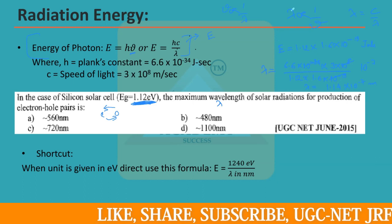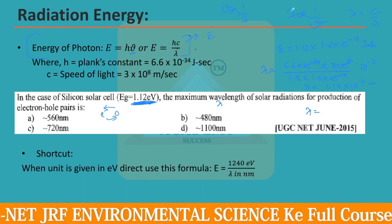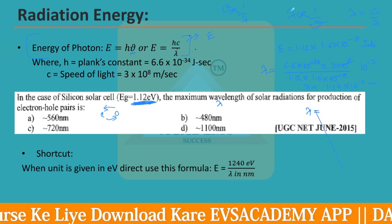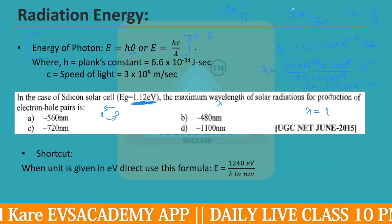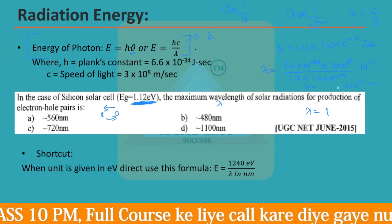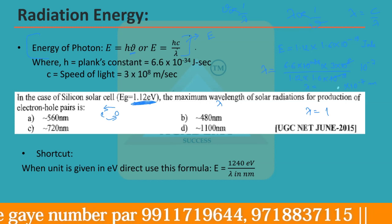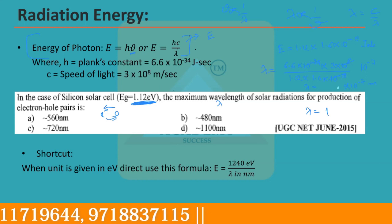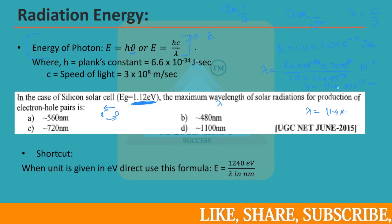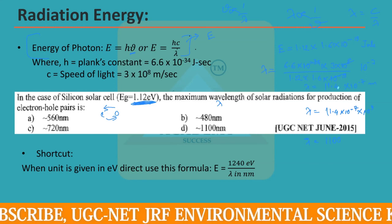Since the answer options are in nanometers, multiply by 10⁹: 1.14 × 10⁻⁷ × 10⁹ = 1.14 × 10² = 114... Correcting the coefficient calculation — 6.6 × 3 = 19.8, divided by (1.12 × 1.6 ≈ 1.79) gives approximately 11.4. So λ ≈ 11.4 × 10⁻⁷ m, which after multiplying by 10⁹ gives approximately 1100 to 1114 nanometers.